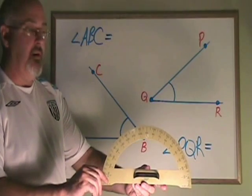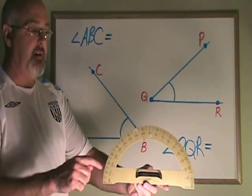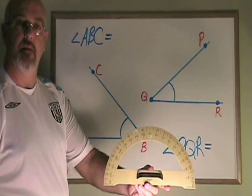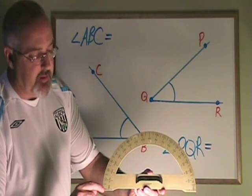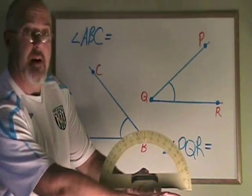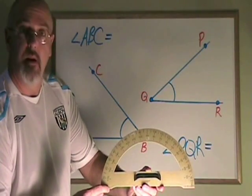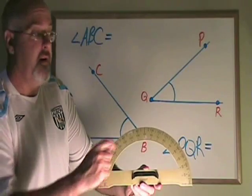One thing that can make a protractor a little bit confusing to use is that it has two sets of numbers on the outer edge. On the outside, we have a set of numbers that counts from zero to 180. And on the inside, we have the numbers from 180 to zero.